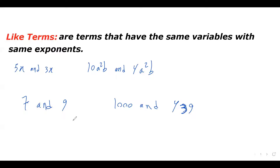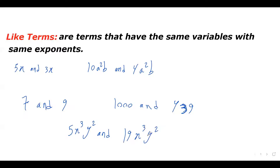Let's take a look at this one: 5x cubed y squared and 19x cubed y squared. As we said, the coefficient doesn't matter. The variables and the exponents on those variables should be the same — x cubed y squared and x cubed y squared. So this term and this term are like terms.